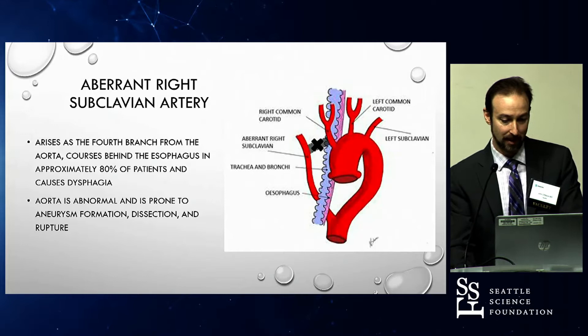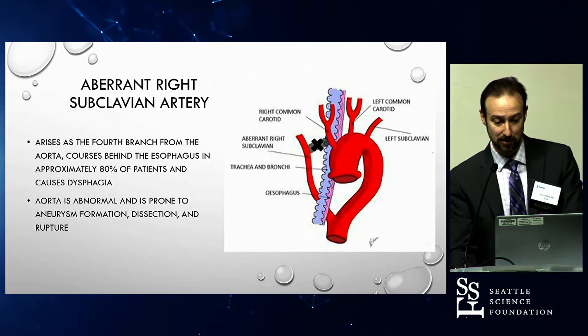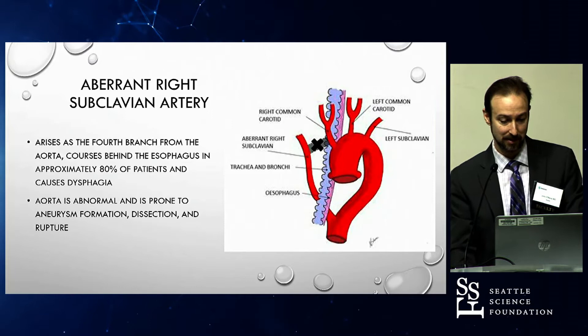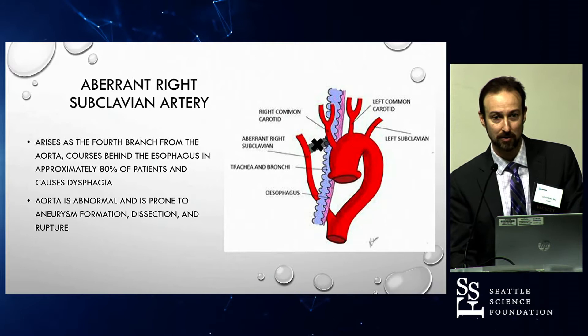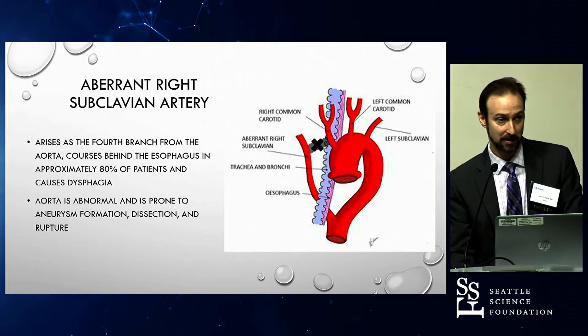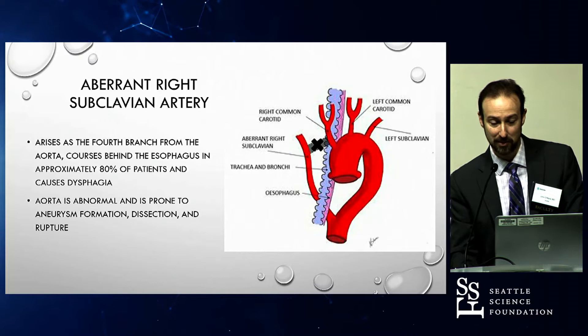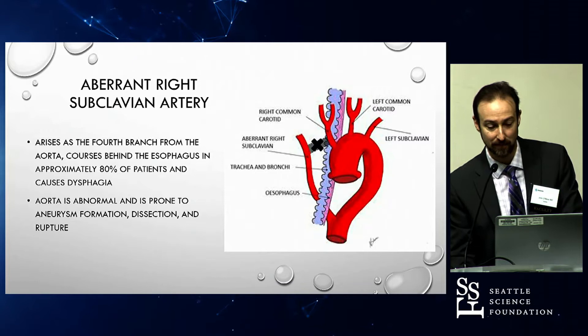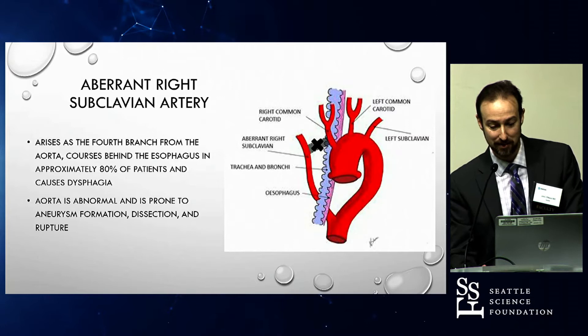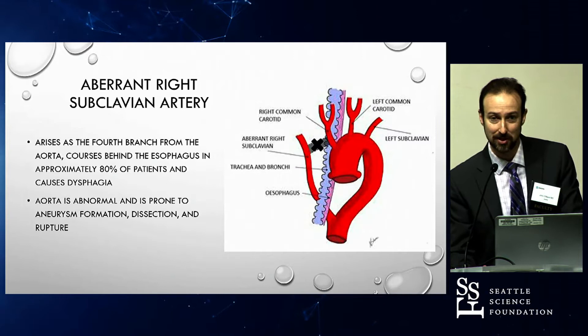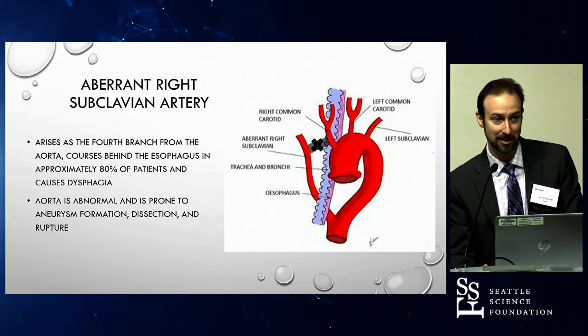An aberrant right subclavian artery — this picture already shows aneurysmal disease in the aorta. What's important about these isn't the aberrancy of the right subclavian itself, but that the aorta is not normal, and these people are prone to having aneurysms and potentially dissections. You can see where there's a gray section with an X on it — that's where the normal right subclavian should be, coming off the innominate artery. In people with the aberrant right subclavian, it comes off as the fourth branch, crosses behind the trachea and esophagus, and can present with symptoms of dysphagia, wheezing, or other airway disease-like symptoms. Imaging and a CT scan would make the diagnosis.